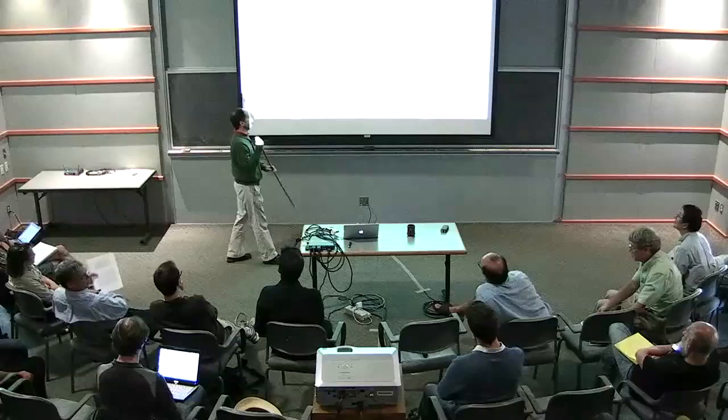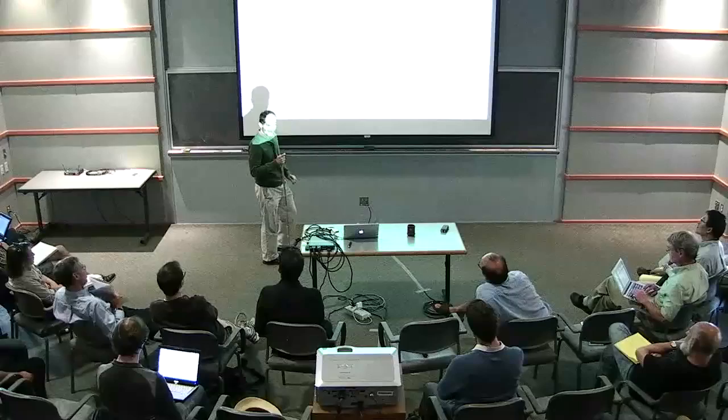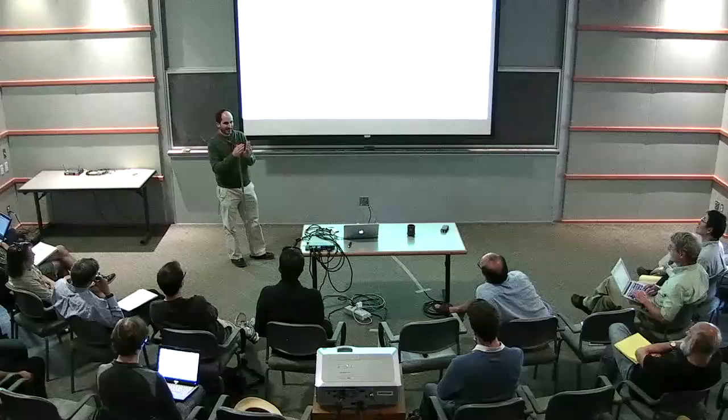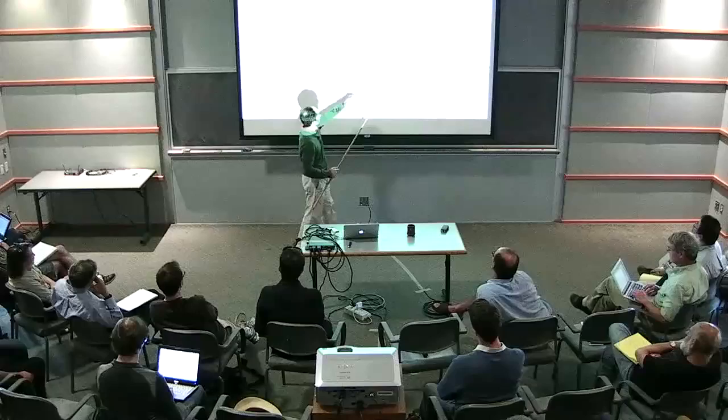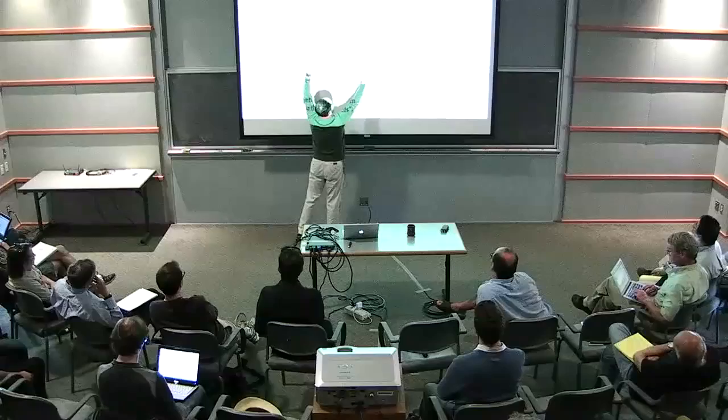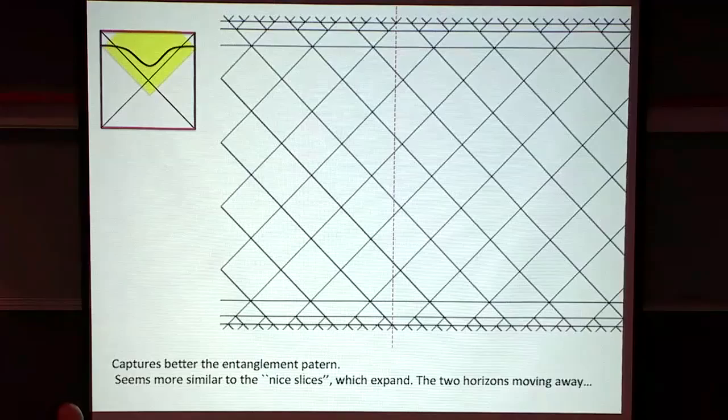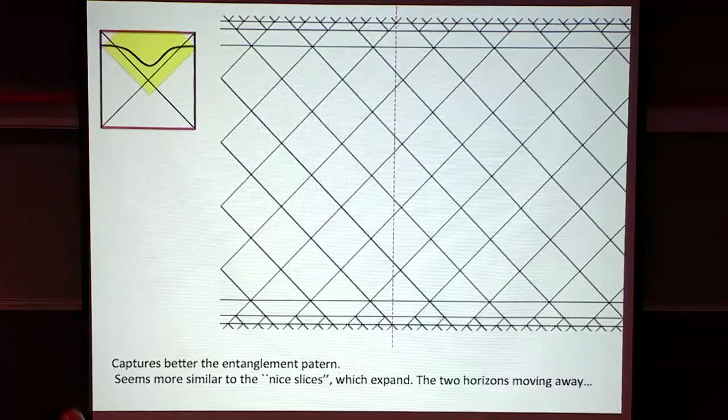The entanglement between the modes outside the horizon and inside the horizon: if you cut along one of these lines, the fact that you've opened this index gives you some entanglement between some degrees of freedom. It's between these localized degrees of freedom which are not obviously physical - they become physical through any Hawking radiation situation, but they are not obviously physical in the GR sense.